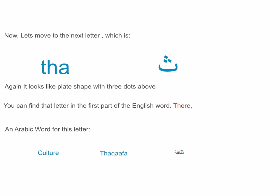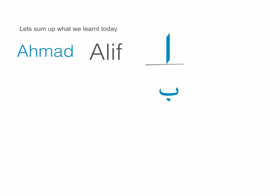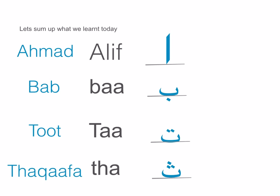Now let's sum up what we learned in this video. We learned the letter Alif, for 'Ahmad.' We learned the letter Ba, for 'bab' meaning 'door.' We learned the letter Ta, for 'toot' meaning 'blackberry.' And finally, we learned the letter Tha, for 'thaqafah' meaning 'culture.' I hope you enjoyed this lesson — make sure to revise this class, and I will see you in the next one. Ma'a salama!